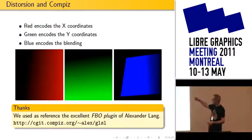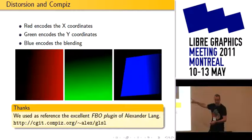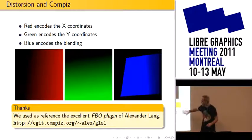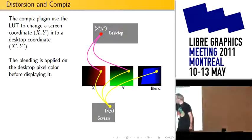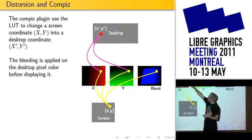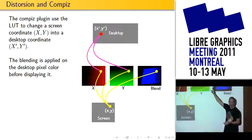The red channel encodes the X coordinate, and the Y is encoded in the green channel. The blue encodes the blending that will be necessary between projectors. The plug-in is based on an excellent FBO plug-in by Alexander Lang. When Compiz processes a pixel on the projector screen, it looks in the lookup table — red and green give the position on the desktop to pick that color, then multiplied by the blue for blending. That's it — very simple and very efficient.